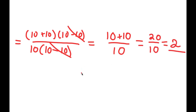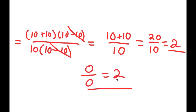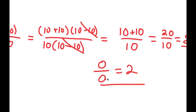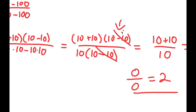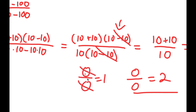So there — I just proved that 0 over 0 is equal to 2. Obviously, 0 over 0 is not 2. So where did I go wrong? Well, I went wrong right here. Remember how I canceled out the 10 minus 10 over 10 minus 10? What is 10 minus 10? 10 minus 10 is 0. So that's saying that 0 divided by 0 is 1. And I can't cancel these two out because 0 divided by 0 is not 1. So that is wrong, and 0 divided by 0 is not equal to 2.